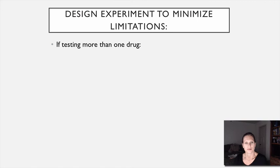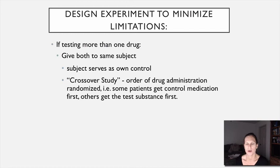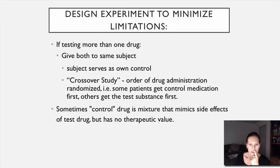Another technique sometimes used is a crossover study, which helps a little. Going back to the Ambien example: you have two groups, one getting the placebo and one getting Ambien. At some point during the study they flip — the group that was getting the placebo now gets Ambien and vice versa. Theoretically nobody should know who has what at which time, including the researchers. This is another way to try to minimize the limitations of trial design.